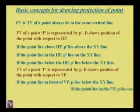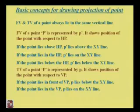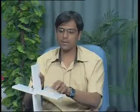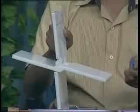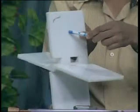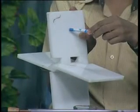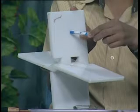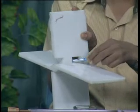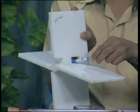Now, if the point P lies in the vertical plane, then its projection lies on the XY line. When the point P lies in the vertical plane and we see from the top view, this point P is in the vertical plane, and its projection will be projected onto the XY line — so it will be on the XY line itself.